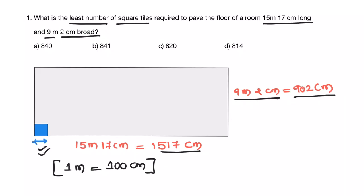So the length of the square tile should be HCF of this length and breadth. The length of the square tile should divide this length and breadth exactly. It should leave no space. That means it should be common factor of length and breadth.